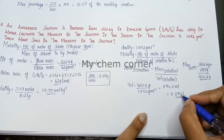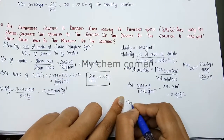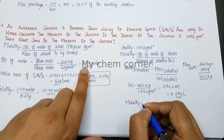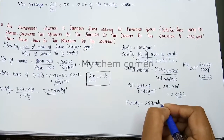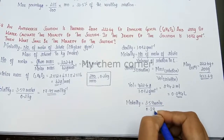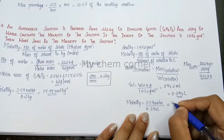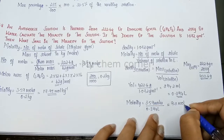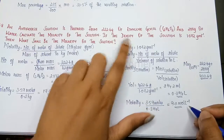Now we have everything to calculate molarity. Molarity equals number of moles of solute, which is 3.59 moles, divided by volume of solution, which is 0.394 liters. Simplifying gives 9.11 moles per liter — that is the molarity of the solution.